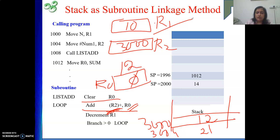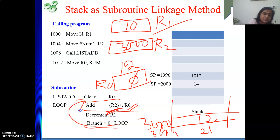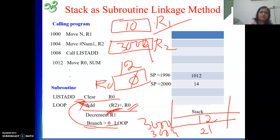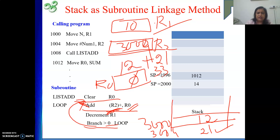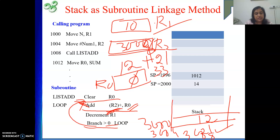BRANCH GREATER THAN 0 LOOP — if the decremented value of R1 is greater than 0, you go back to the ADD instruction to add the next element. Right now R2 is 3004, so from memory location 3004 we take 21, which is added to 12, giving 33 in R0. Then R2 advances to 3008, and this continues until R1 is greater than 0. Once R1 becomes 0, you stop, meaning this part of the addition is done.